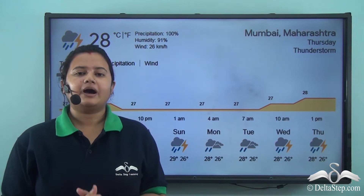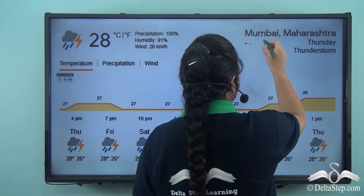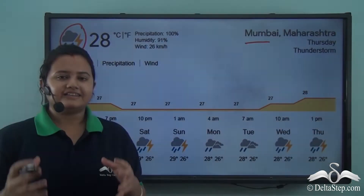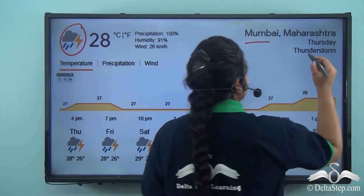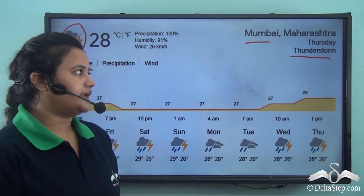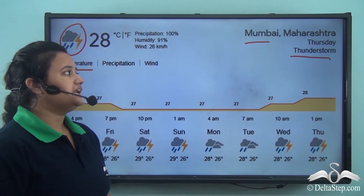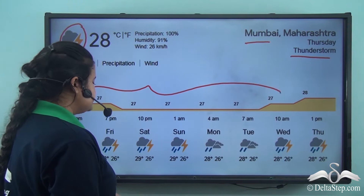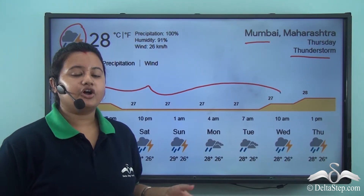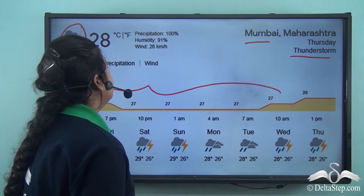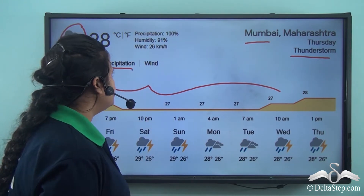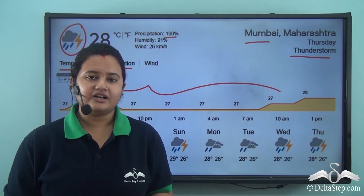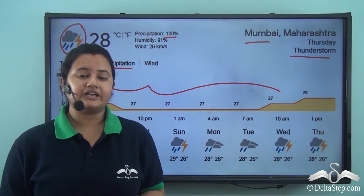Here we have a weather update chart of Mumbai for a particular week. This icon symbolizes that this particular day is going to experience a thunderstorm. Not only this particular day but this entire week is going to experience bad weather owing to rainfall and thunderstorms. Here we have what is called precipitation. 100% precipitation means that the chances or probability of rainfall is 100%.